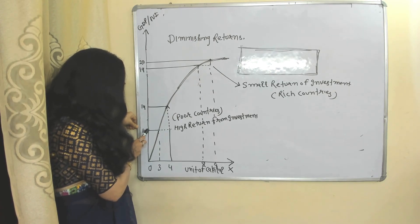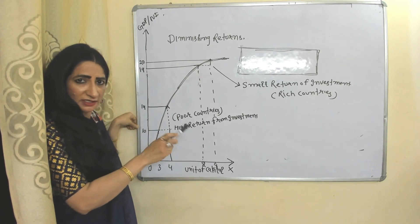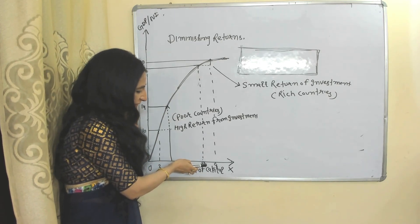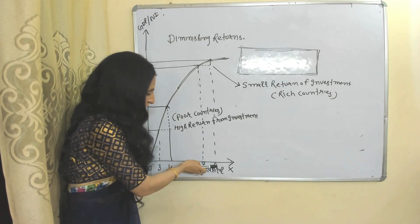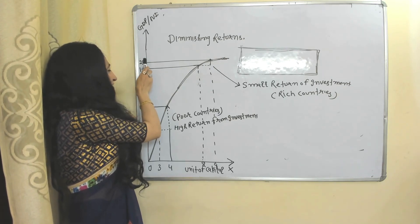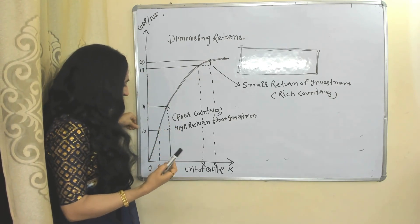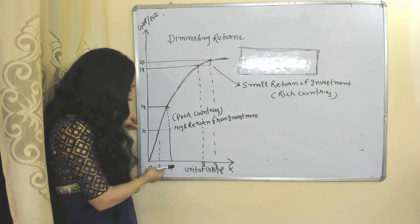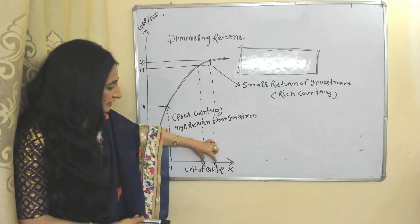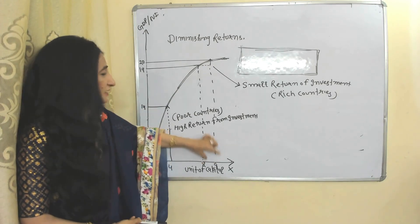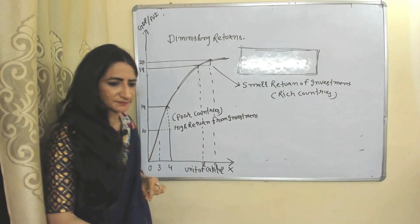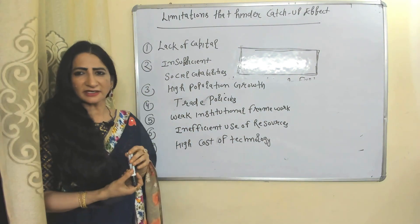But when rich countries increase their capital from 8 to 9, it leads to only a 19 to 20 increase in GDP. So you can see: when a poor country increases capital, GDP increases more; but when a rich country increases capital, GDP increases very little.